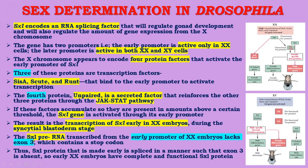The SXL pre-mRNA transcribed from the early promoter in double-X embryos lacks exon 3, which contains a stop codon. Therefore, the SXL protein made early is spliced in a manner such that exon 3 is absent, so early double-X embryos have complete and functional SXL protein.